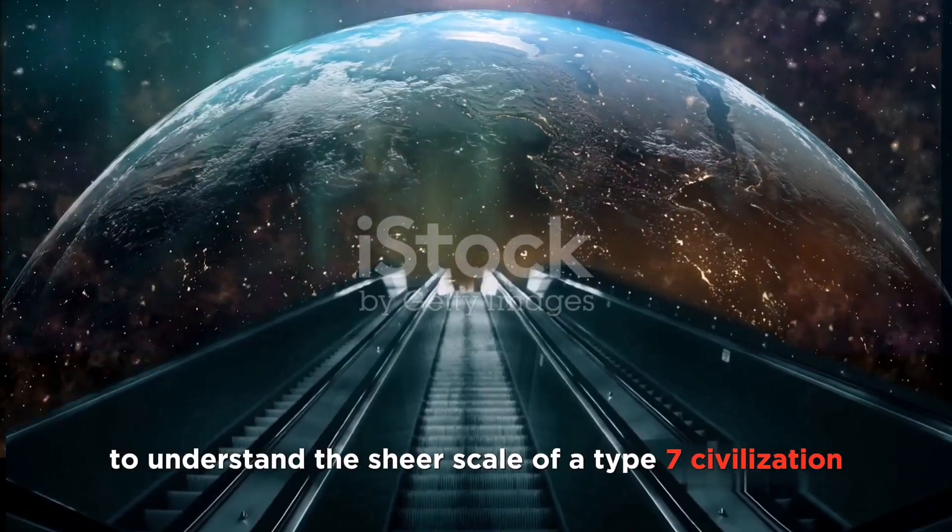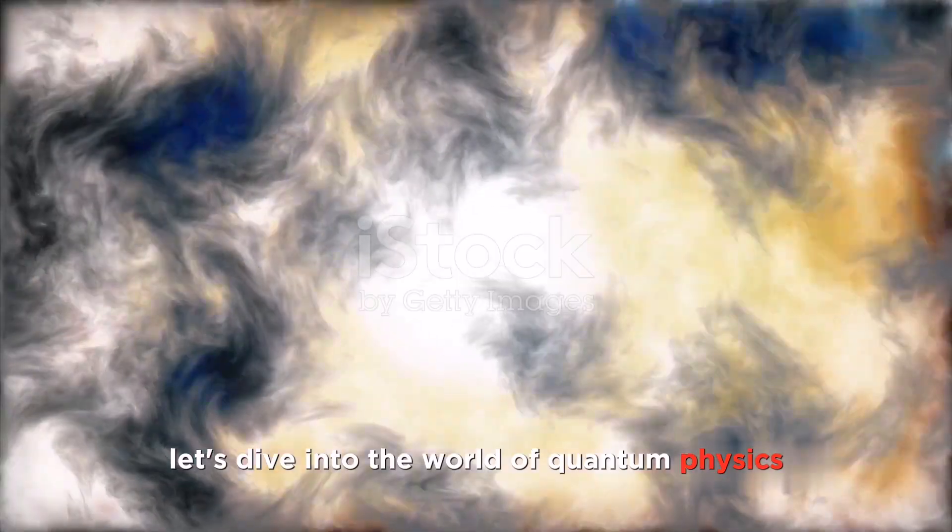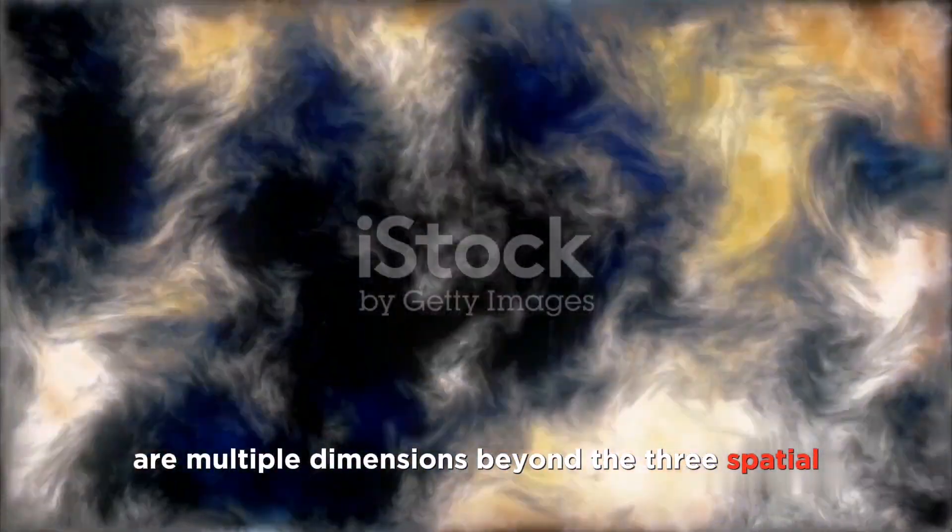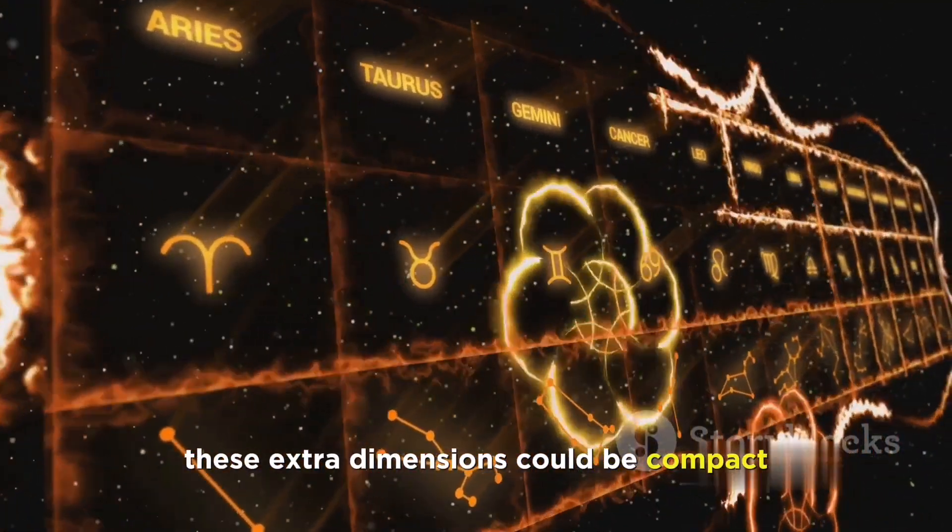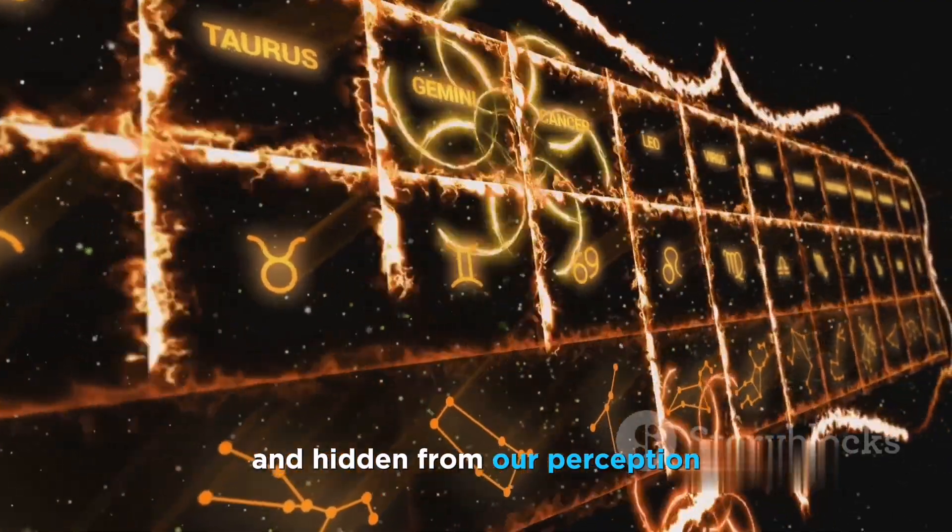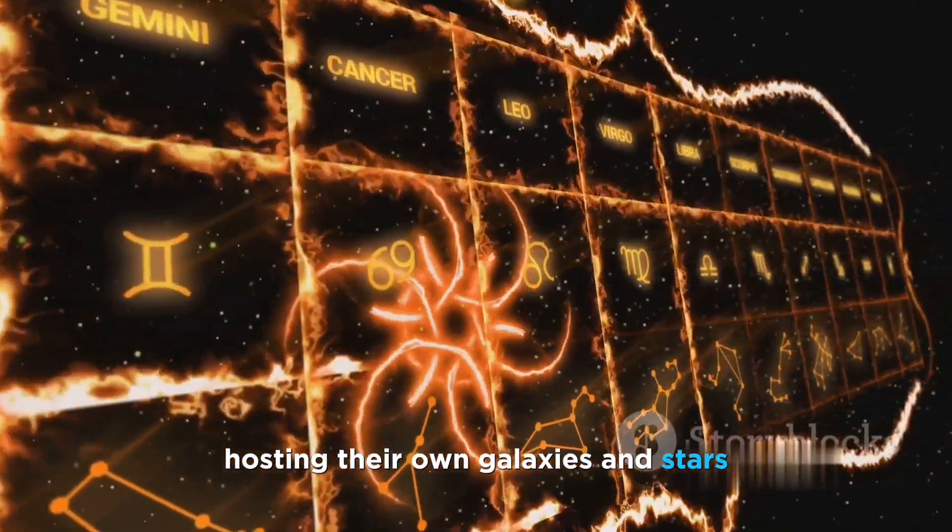To understand the sheer scale of a type 7 civilization, let's dive into the world of quantum physics and multiverse theory. Quantum physics suggests that there are multiple dimensions beyond the three spatial and one temporal dimensions we experience. These extra dimensions could be compact and hidden from our perception, or they could be large and expansive hosting their own galaxies and stars.